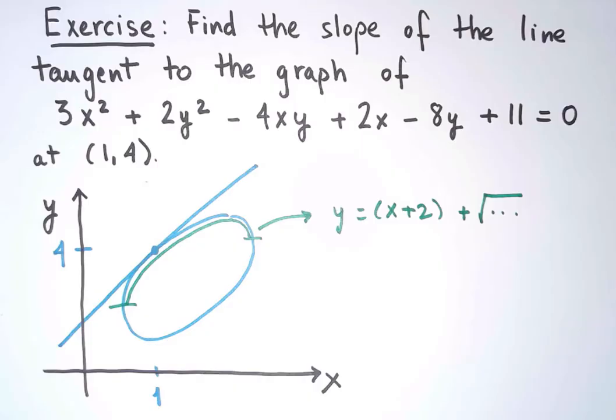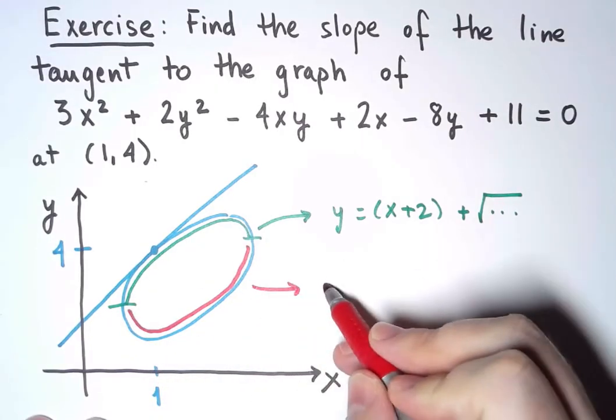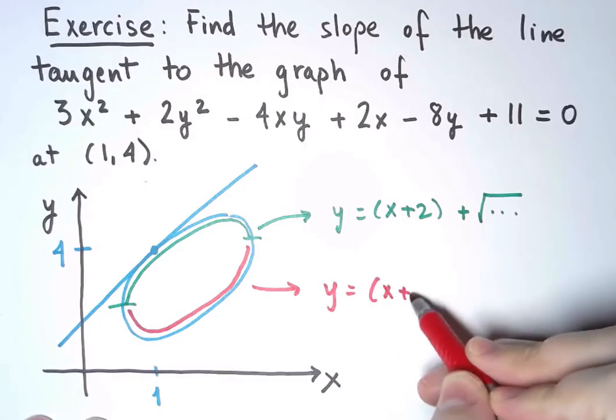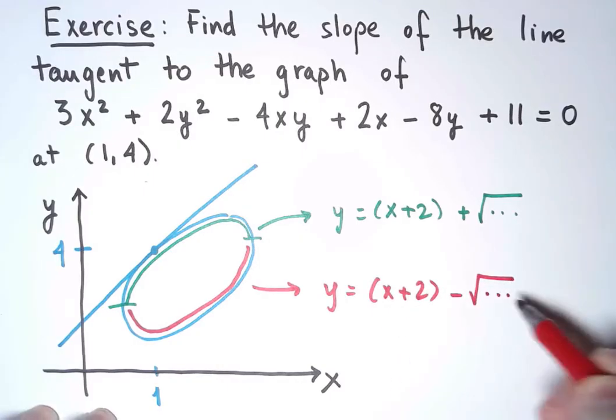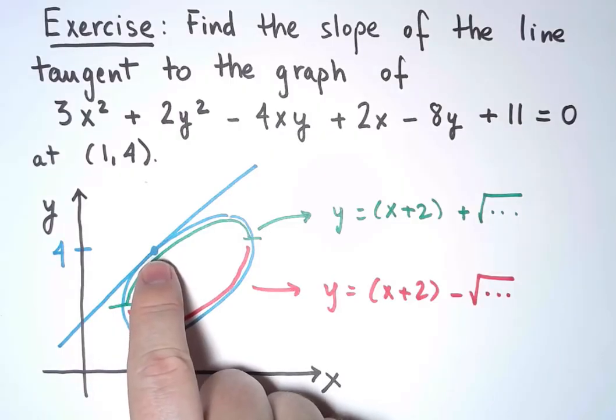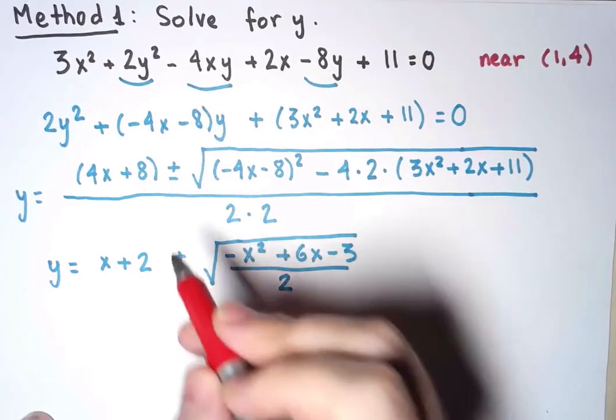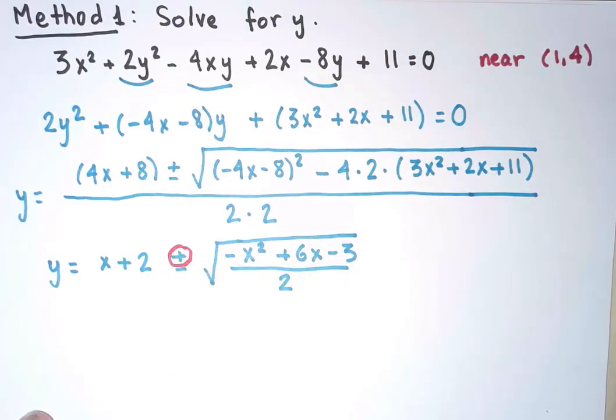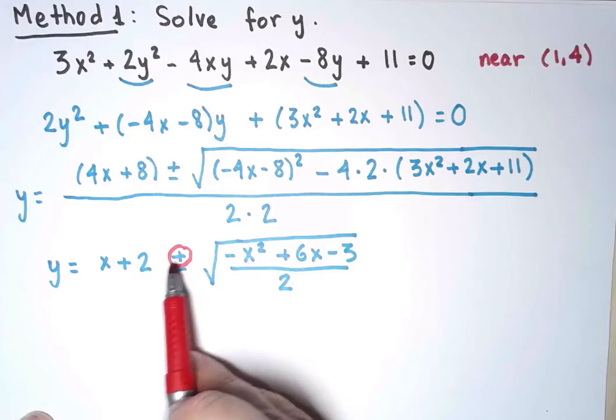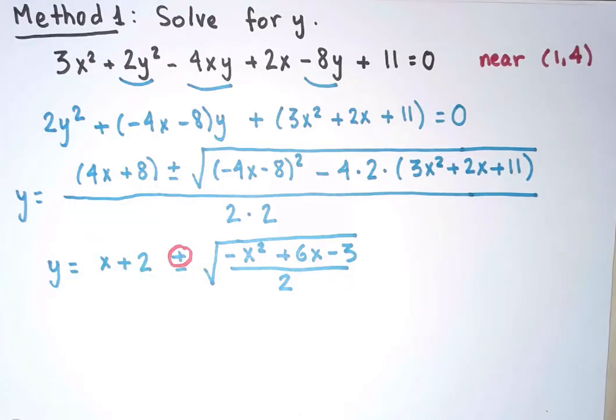And if I were to take the bottom part of the graph, that corresponds to choosing the minus sign in the square root. Since I only care about the point (1,4), I need to choose the plus sign. So I'll keep the plus sign. And at this moment, we can verify that when x equals 1, if I choose the plus sign, this comes out to be 4. So now I know what I need to do.